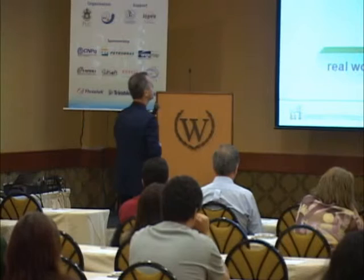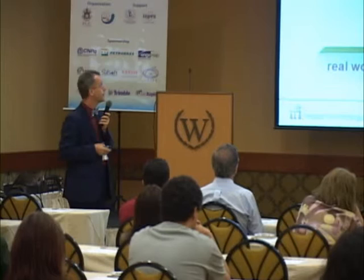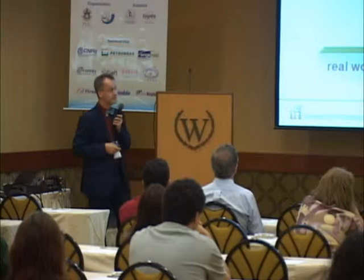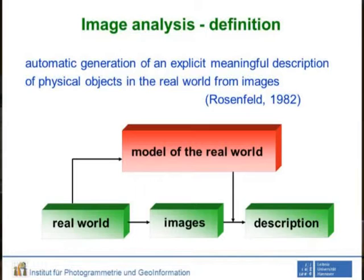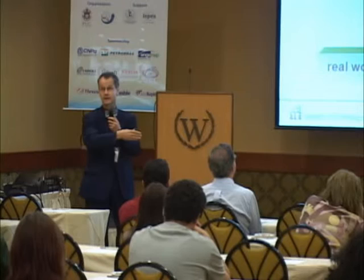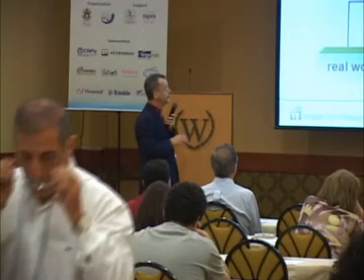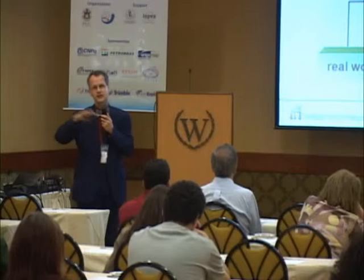Image analysis — this is the definition from 1982 by Azriel Rosenfeld, one of the pioneers of the area. He says: image analysis is the automatic generation of an explicit, meaningful description of physical objects in the real world from images. You have the real world, you take images, and the description is what you want. Meaningful means meaningful with respect to the application. And there is no way to do any type of image analysis without being concerned about the model of the real world — comprising all these objects, their relations, their contexts, et cetera.